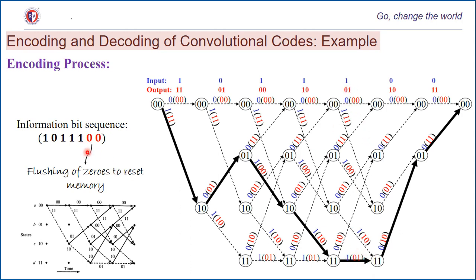This is the end of the original information bits. However, we have to flush zeros to reset the memory. At state 11, we push the first 0, giving output 10, and then another 0 is flushed through giving output 11, transitioning from state 01 back to reset the memory to state 00. Hence for the given information bit sequence 1,0,1,1,1,0,0, this is the codeword which is the output of this convolutional encoder.